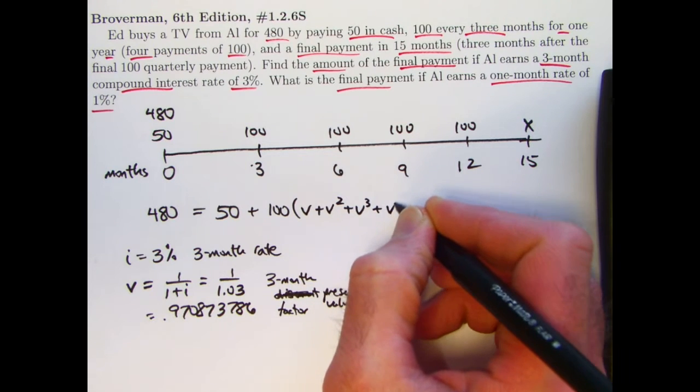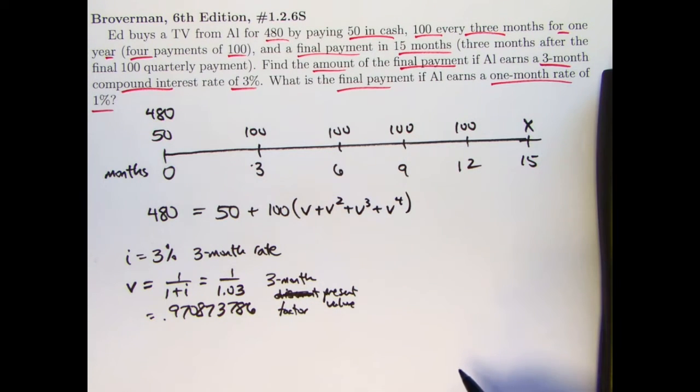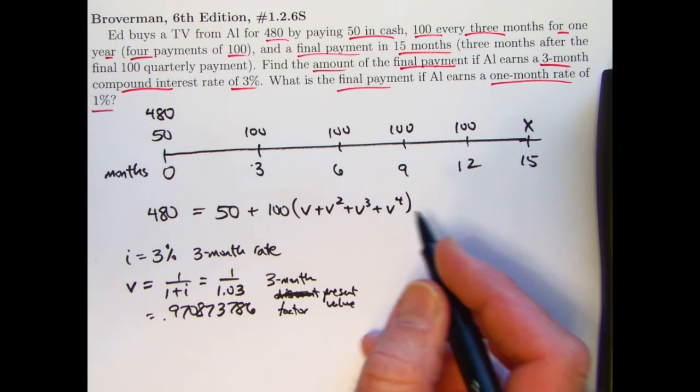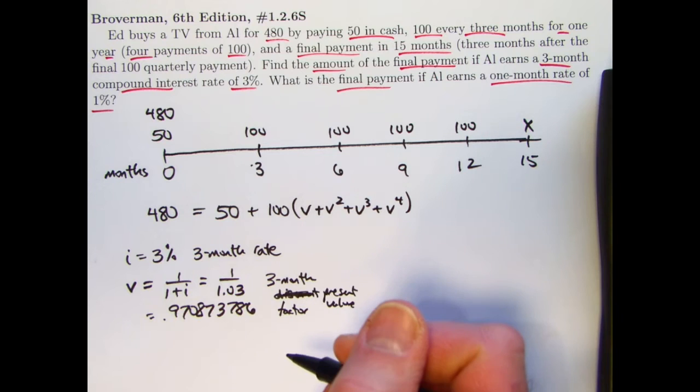Again, since V is already in terms of a three-month rate, this should not be V cubed plus V to the sixth plus V to the ninth plus V to the twelfth. It should be what I have here, V plus V squared plus V cubed plus V to the fourth.